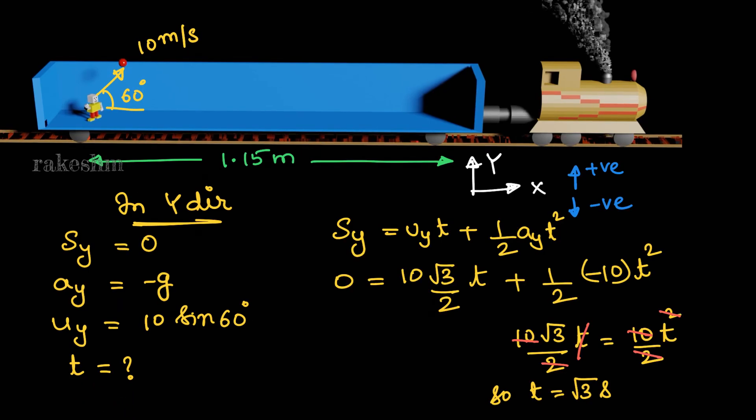So what is the time of flight. We use the formula: displacement in y direction equals to uy t plus half ay t square. Putting all the values in this equation we get t equals to root 3 seconds.